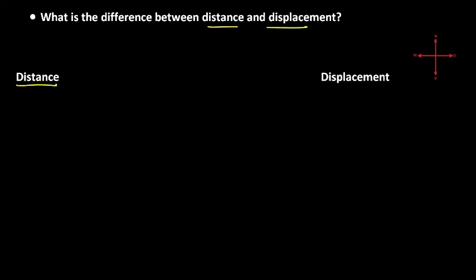Let's first take a look at some examples of distance. Let's suppose that you start at point X — we'll call that the origin. We're going to start at the origin, point X, and ride a bike all the way over to point Y, and stop there. If I asked you what is the distance you traveled, you might say: between point X and point Y, I traveled 10 kilometers. That is the distance — 10 kilometers.